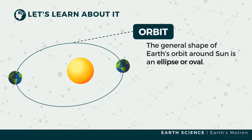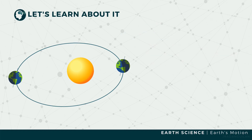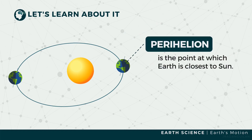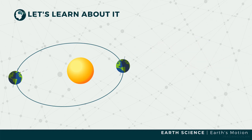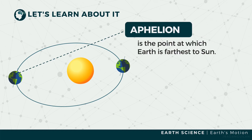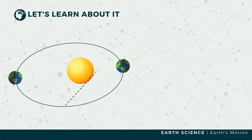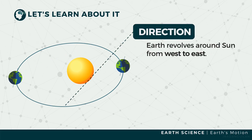However, even though in truth it is an ellipse, the shape is nearly circular. This means that at certain times, Earth is closest to the Sun, which is what we call perihelion, while at other times it is farthest, which is known as aphelion. Earth revolves around the Sun in a west-to-east, or counterclockwise, manner — the same as its rotation.